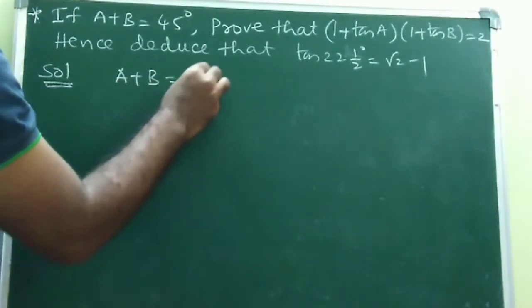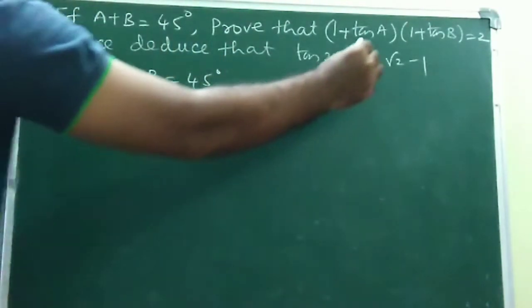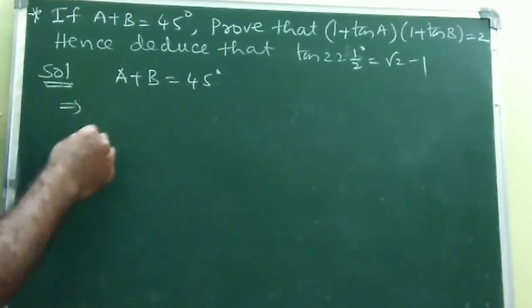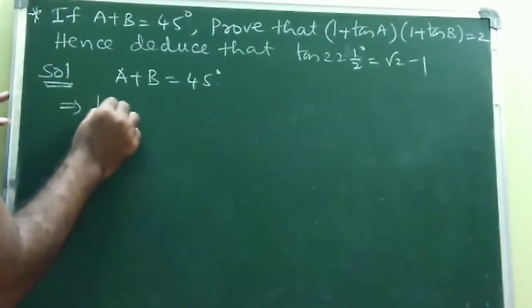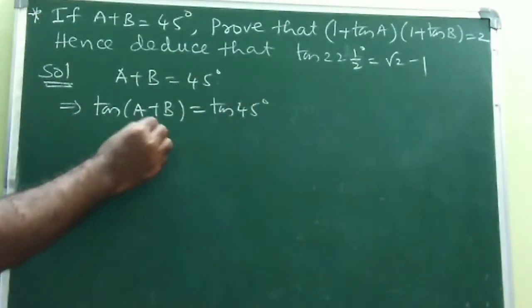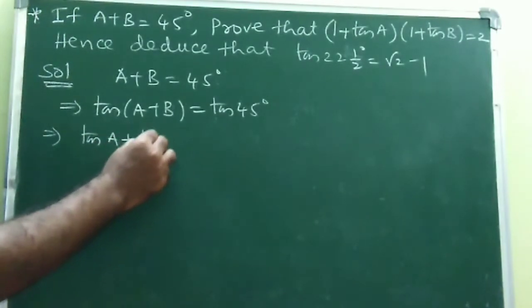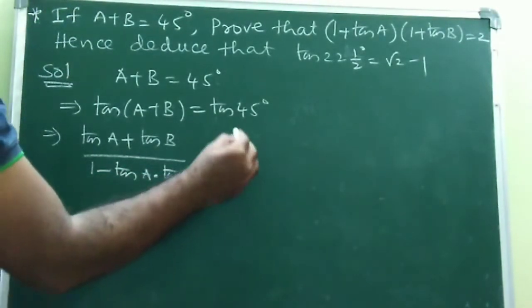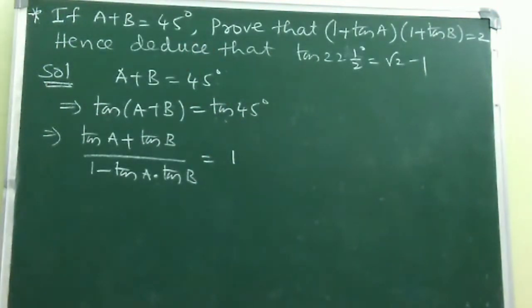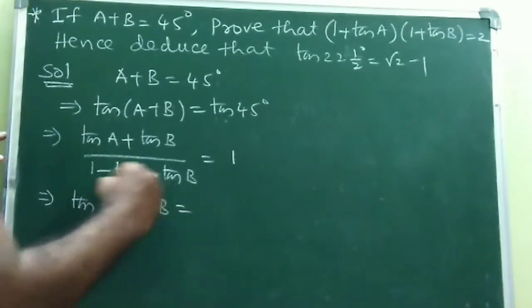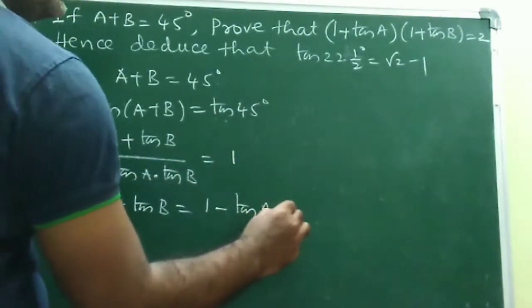Given: A + B = 45°. Since the expression to prove is in terms of tan, apply tan on both sides: tan(A + B) = tan 45°. Write the formula: (tan A + tan B)/(1 - tan A·tan B) = 1. Cross-multiplying: tan A + tan B = 1 - tan A·tan B.